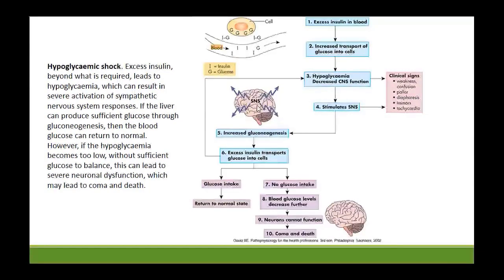To maintain blood glucose levels, the liver breaks down glycogen and gluconeogenesis occurs — the body tries to make new glucose. However, if blood glucose levels cannot be maintained, the brain suffers. Neurons cannot function, leading to coma and death. Early warning signs include weakness, confusion, tachycardia, and tremors. Diabetic patients should be taught these warning signs, as failure to raise glucose levels within minutes can lead to neuronal dysfunction, coma, and death.